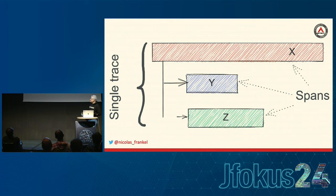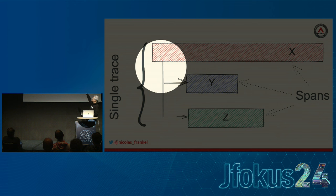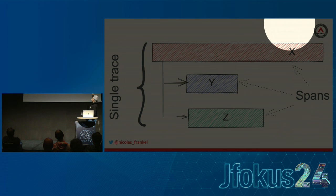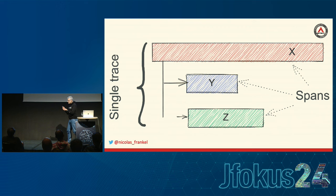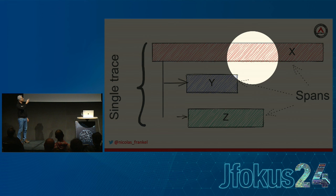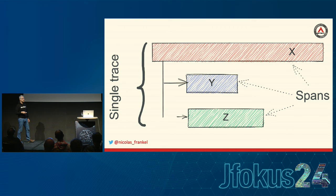The W3C trace context specification is a couple of pages long and defines two key concepts. A trace is akin to a business request across all your components. A span happens in one single component — you have at least one span per component, but you can have internal spans so one component can have multiple spans. In a diagram: one trace, three components, three spans in a parent-child relationship. X has no parent; Y and Z have the same parent X, and Y and Z run roughly in parallel.